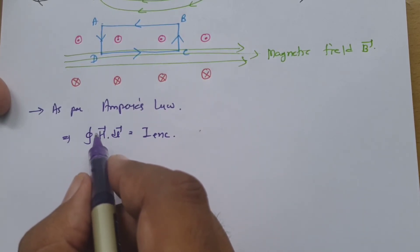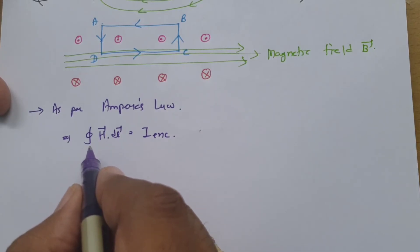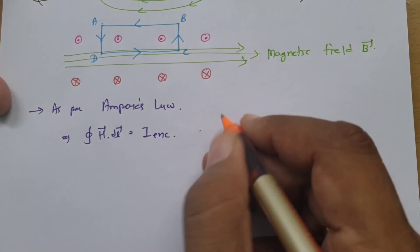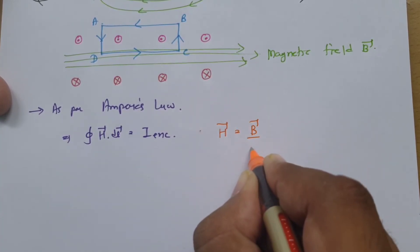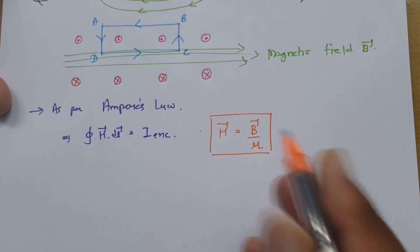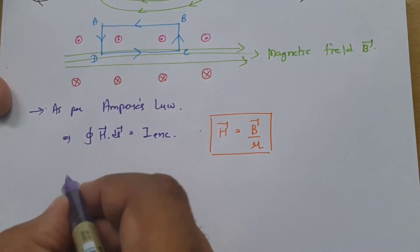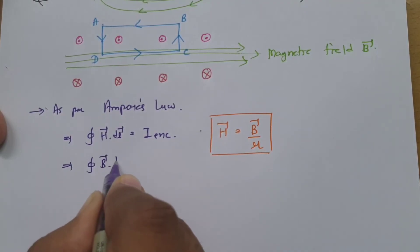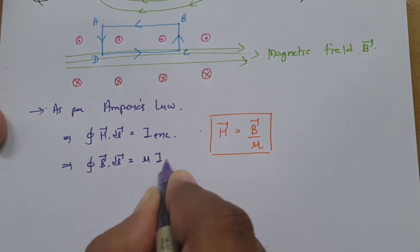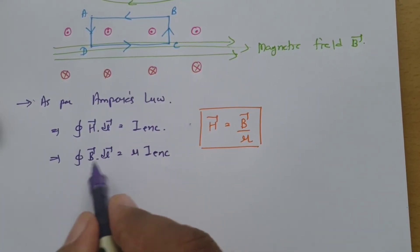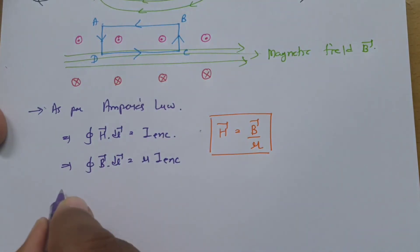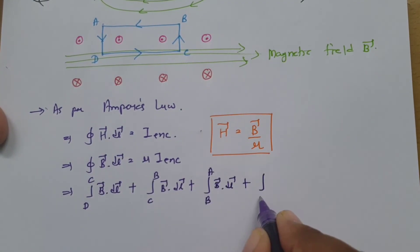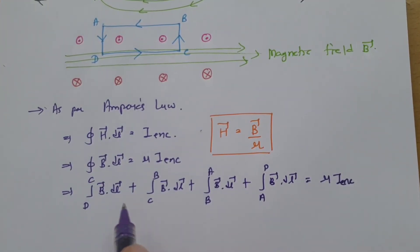We know the basic relation between magnetic field B and magnetic field intensity H: H = B / mu. Placing this into the equation, the line integration of B over a closed loop equals mu times the enclosed current. This line integration runs from D to C, C to B, B to A, and A to D. Evaluating each segment: for D to C, the line element and magnetic field are in the same direction, so the angle theta between B and dl is 0 degrees.